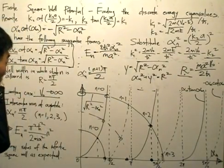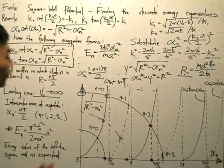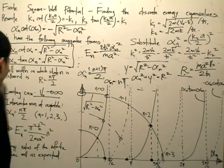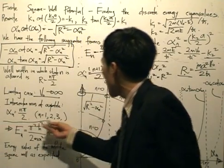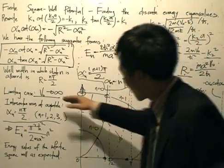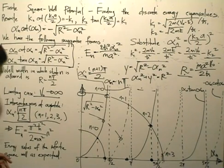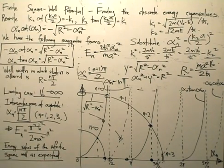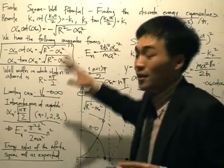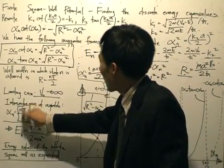For minus alpha_n·cotangent(alpha_n), when cotangent tends to infinity, alpha_n equals n·π — that is, π, 2π, and so on. Combining both sets, intersections at the asymptotes give alpha_n equal to n·π/2 where n equals 1, 2, 3. Substituting n·π/2 into the energy expression gives the energy eigenvalues of an infinite square well, exactly as expected. So everything is consistent: starting from a finite square well and letting v₀ go to infinity recovers the infinite square well energies.